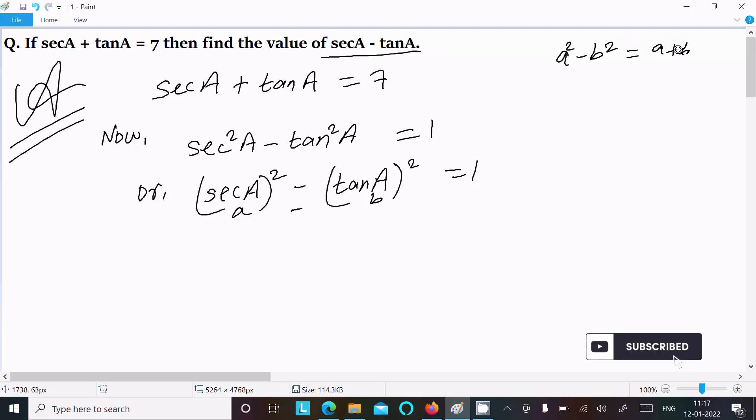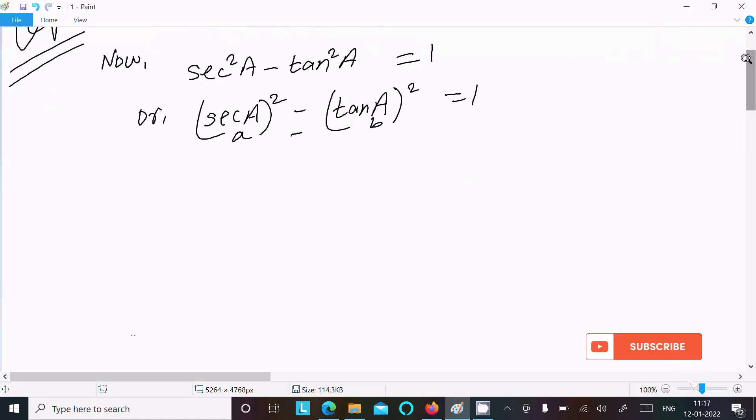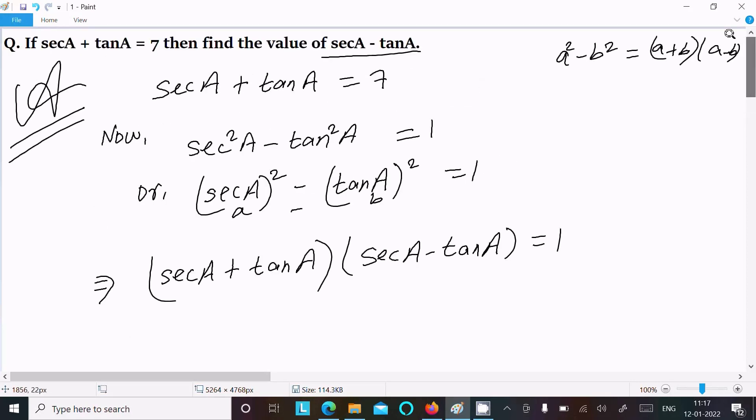The formula is a plus b times a minus b. So now we can write this one: secA plus tanA times secA minus tanA equal to 1. Now secA plus tanA, the value given is 7.